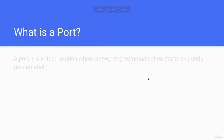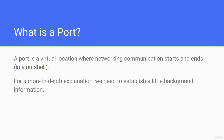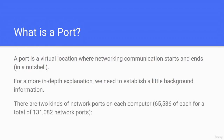What is a port? A port is a virtual location where networking communication starts and ends. There are two kinds of network ports on each computer: 65,536 of each type, for a total of 131,072 network ports. These are considered as TCP and UDP.